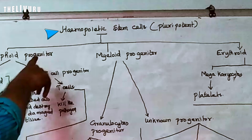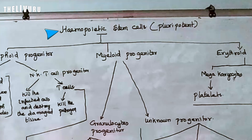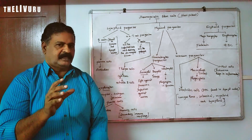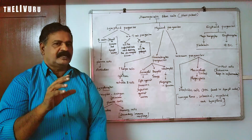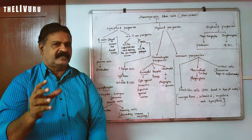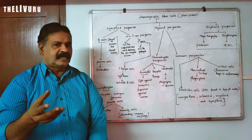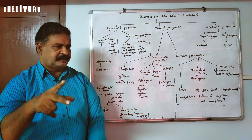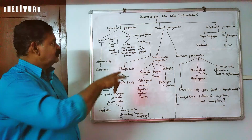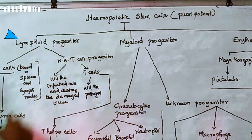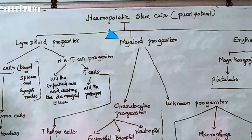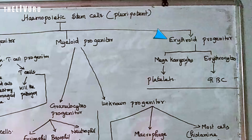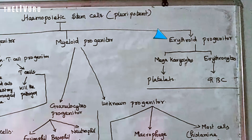The hematopoietic stem cells are from bone marrow. There are three progenitor cells: lymphoid progenitor, myeloid progenitor, and erythroid progenitor.